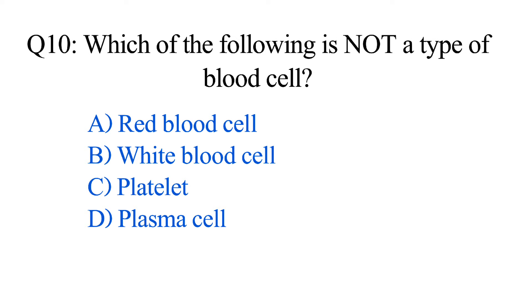Question number ten. Which of the following is not a type of blood cell? Option A: Red blood cell. B: White blood cell. C: Platelet. D: Plasma cell. The correct option is Option D: Plasma cell.